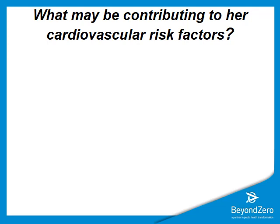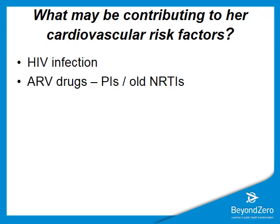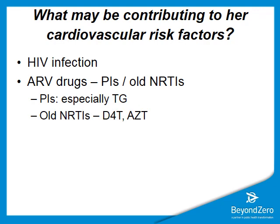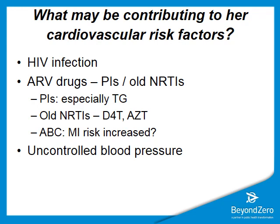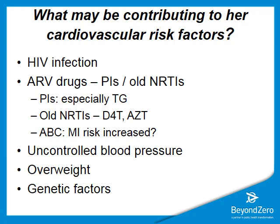Before addressing what to do with that result, let's consider what might be compounding this cardiovascular risk picture. HIV infection on its own also increases cardiovascular risk. ARV drugs help reduce the risk from HIV itself, but the actual drugs can also be problematic. For example, PIs can especially affect triglycerides. Older NRTIs such as d4T or AZT have been shown to independently increase risk and have a negative effect on the lipid profile. There have been concerns about abacavir, especially in elderly patients, also increasing the risk of MI. Her blood pressure not being properly controlled will be massively impacting on that, and her overweight status may be partly driving the high risk factors, alongside possible genetic constitutional factors.